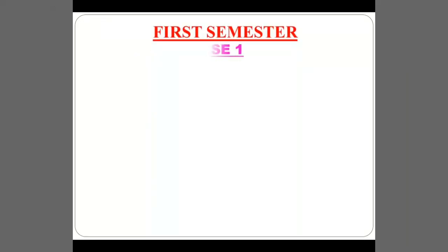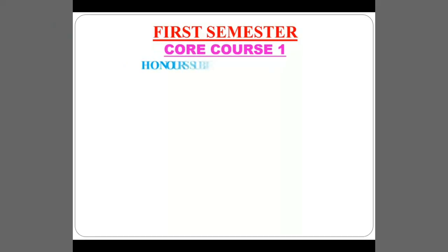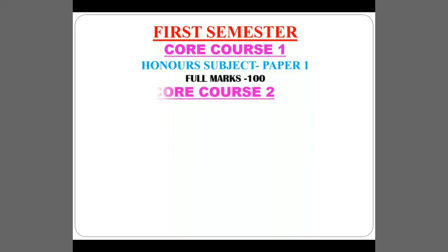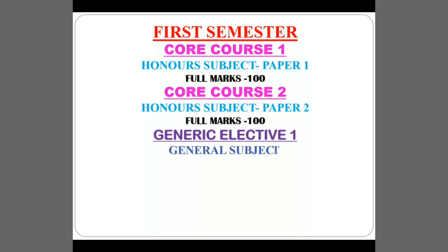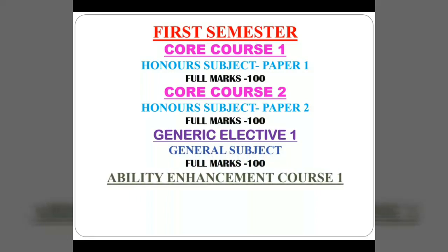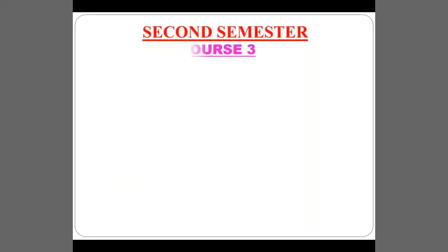First semester contains core course 1, which is paper 1 of the honours subject with full marks 100; core course 2, which is honours paper 2 with full marks 100; generic elective 1, which is a general subject with full marks 100; and an ability enhancement course, which is a language paper or environmental compulsory paper with full marks 100.